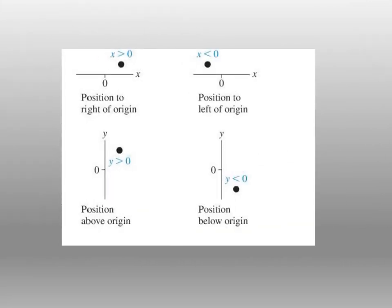We are looking at four different positions on an x and y scale. The position of this particle is in the positive x direction because x is greater than zero and the particle is to the right of the origin. Here x is negative because the particle is left of the origin. Same idea with the y-axis: if it is above the origin, y is positive; if it is below, y is negative.